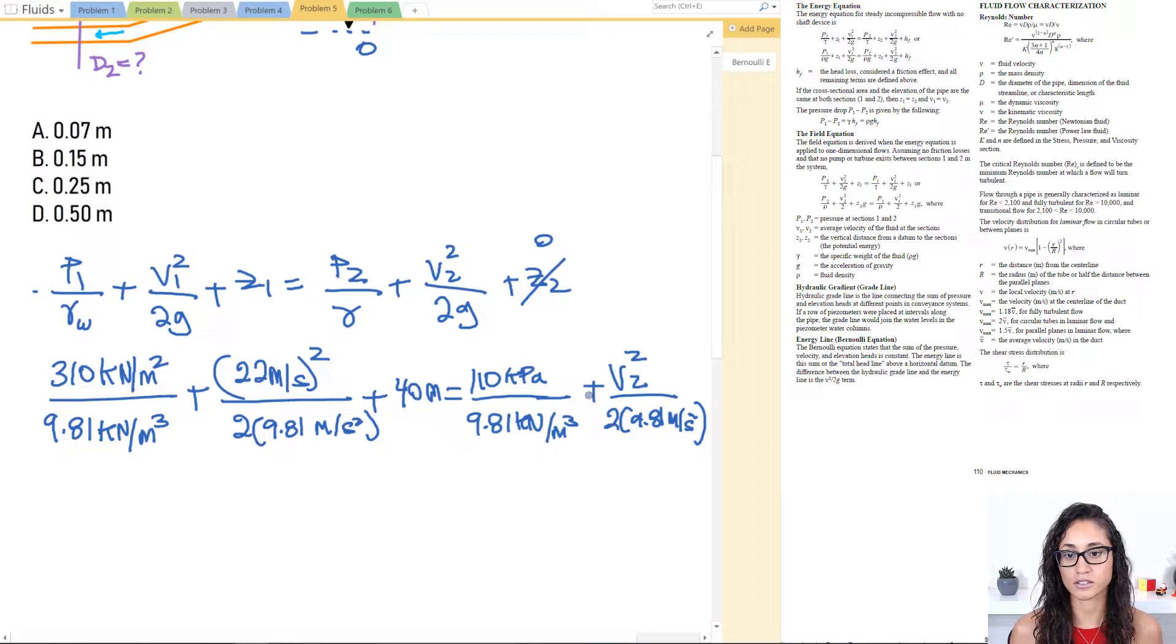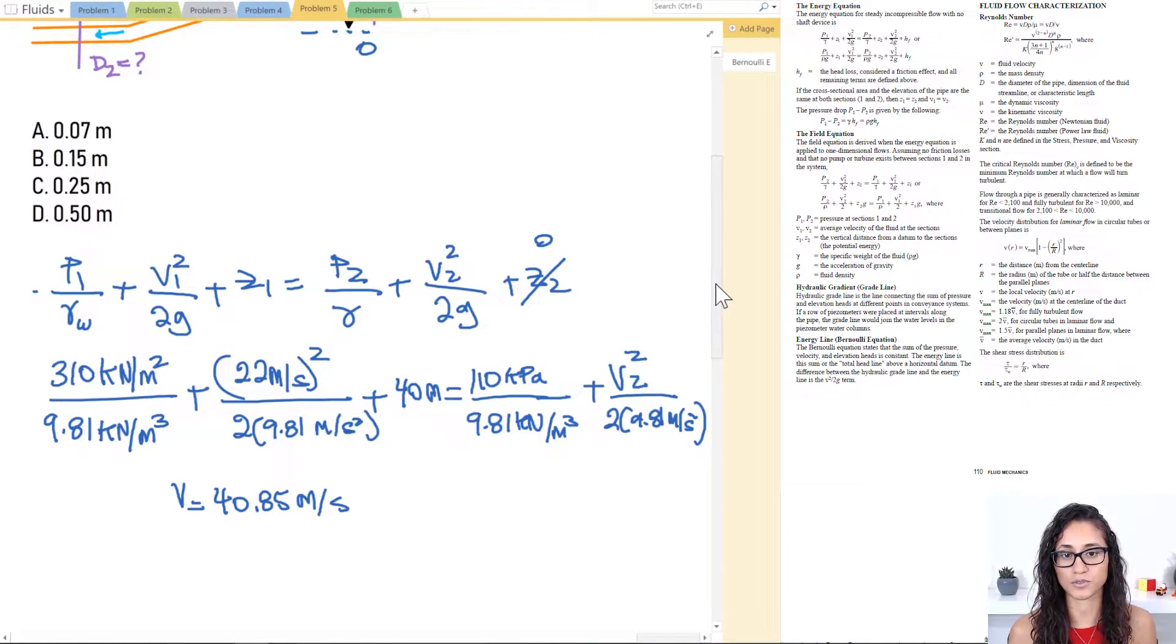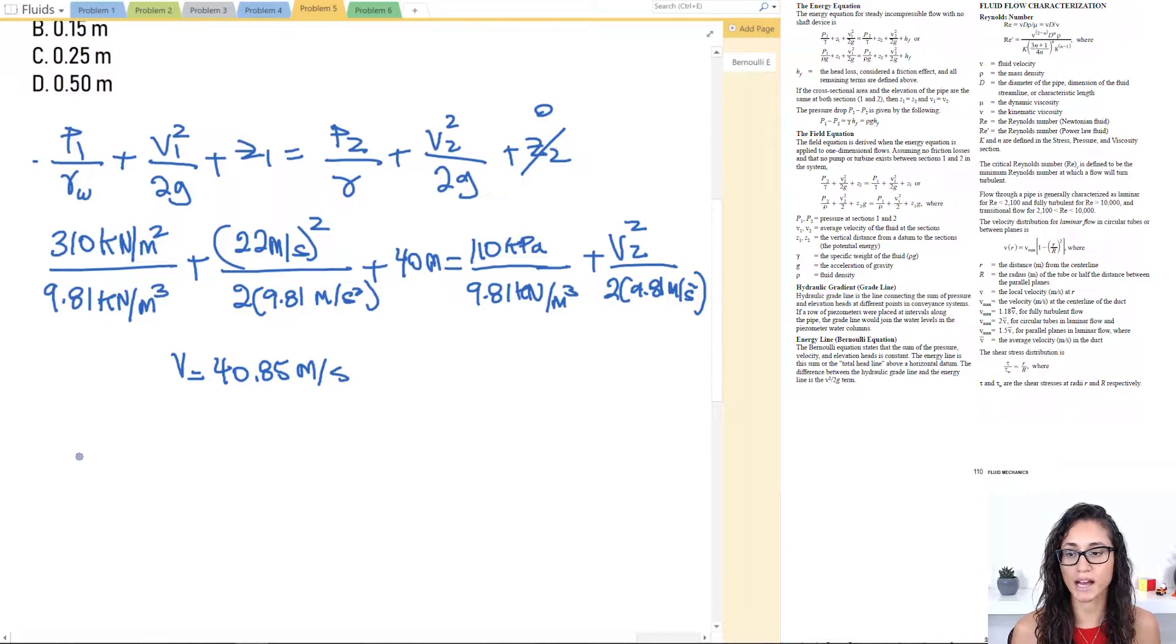All you got to do here is solve for V2. You plug this in, you bring this to the other side, then you multiply it by 2 times 9.8 and then you take the square root of the whole term. If you solve for V, you'll get an answer of 40.85 meters per second. Because we have steady flow incompressible fluid, the conservation of mass requires that density 1 equals density 2, which leads us to the continuity equation.